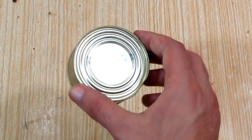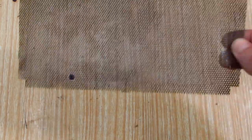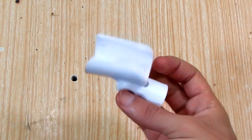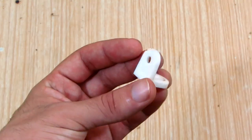For this project we're going to need a tin can, piece of thick sponge, piece of perforated sheet, microphone holder, and plastic bracket.